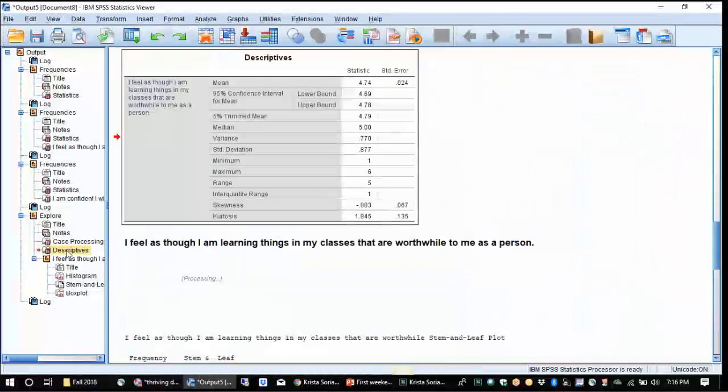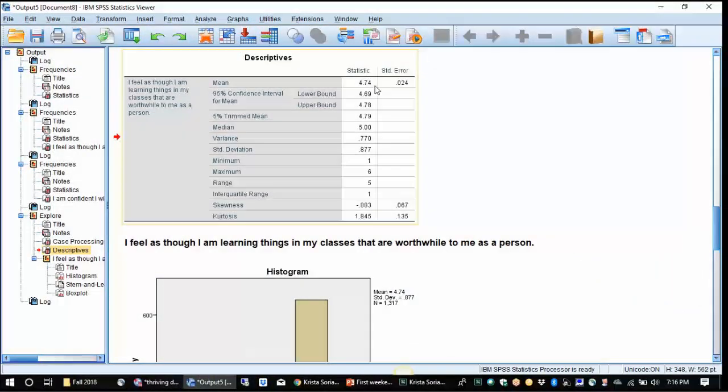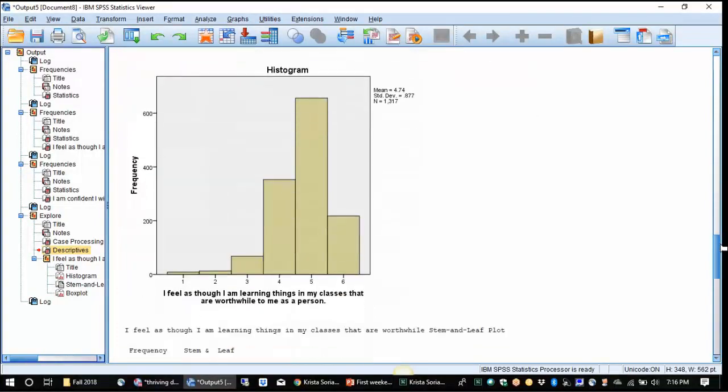Okay, so our output. So first in our output we get our mean value 4.74 compared to our median, which is 5. We get a little bit more information about our variance and standard deviation, and we'll talk about those in our next lecture on measures of dispersion. If we scroll down, we first looked at histograms, we first talked about histograms.